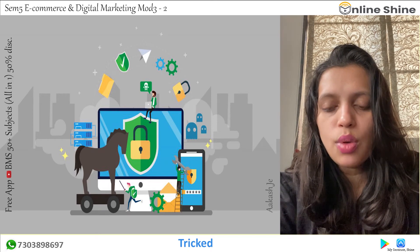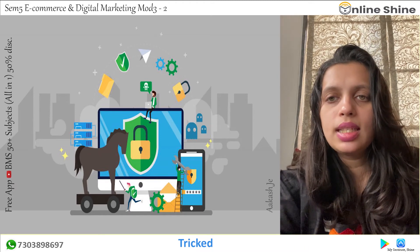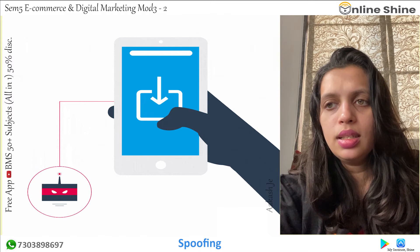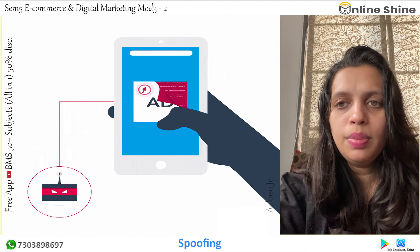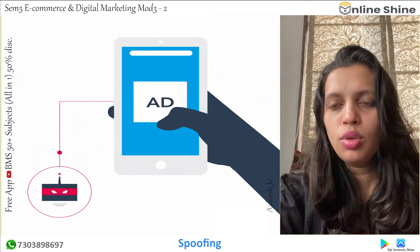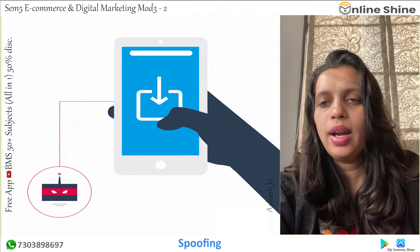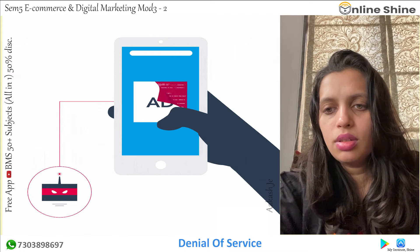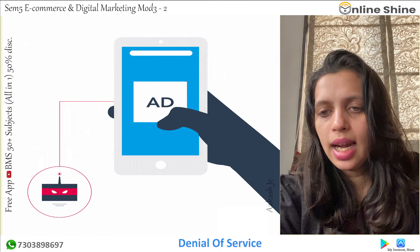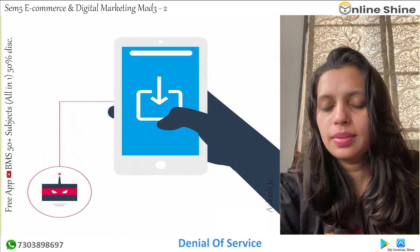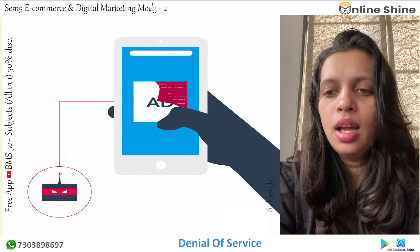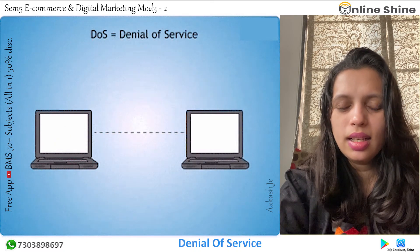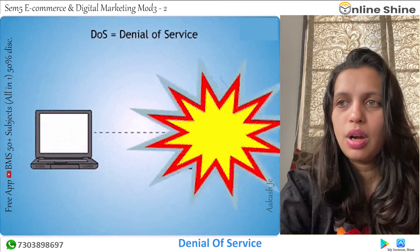A Trojan horse can steal the user's account data, browsing history, and all downloaded content. Next is spoofing. Spoofing attacks occur when a malicious party impersonates another device and uses a network in order to launch an attack against the network's host, steal data, spread malware, or bypass access controls. This is related to the Denial of Service (DOS) attack, which hampers the capacity of an e-commerce server, making it inaccessible to legitimate users.